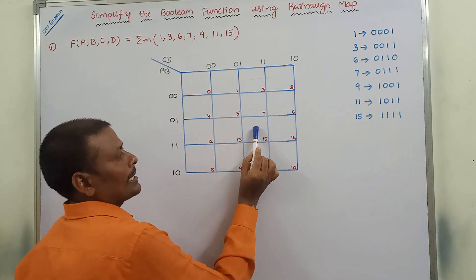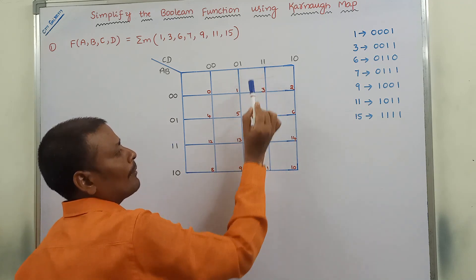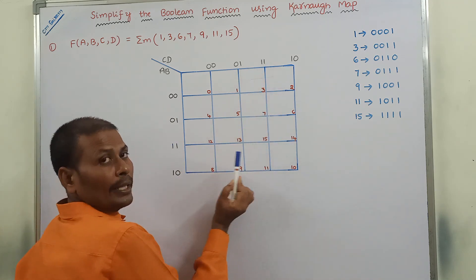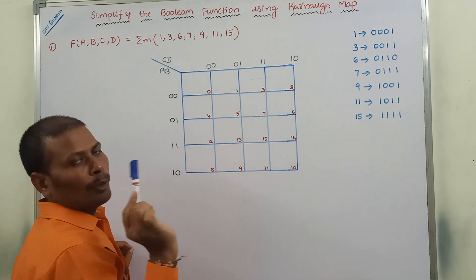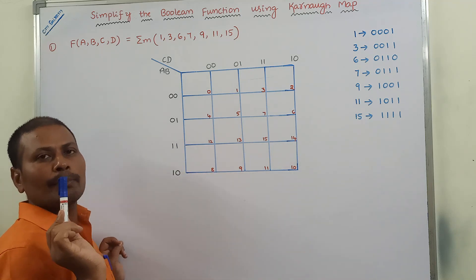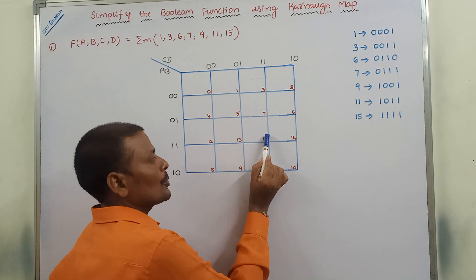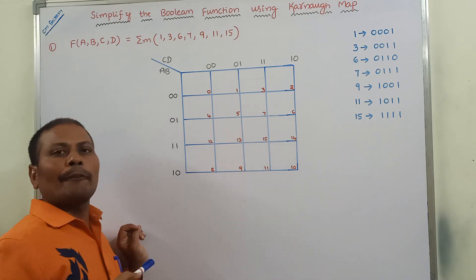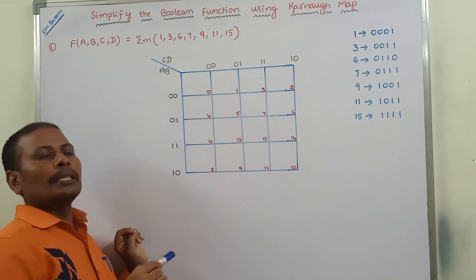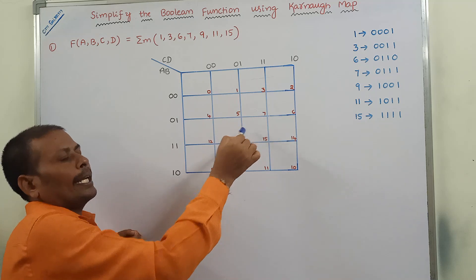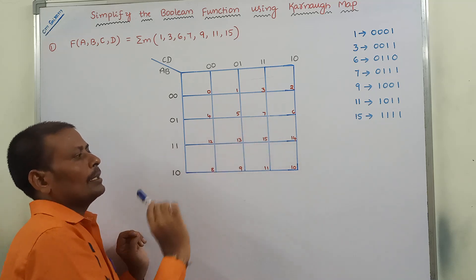Next, I am taking this cell. Row-wise 11, column-wise 11 — so the 4-bit binary is 1111. The equivalent decimal number is 15. So we write 15 as the cell number in the corner of this cell.